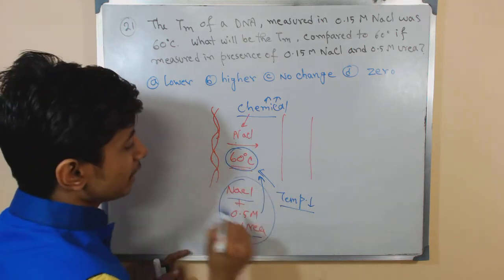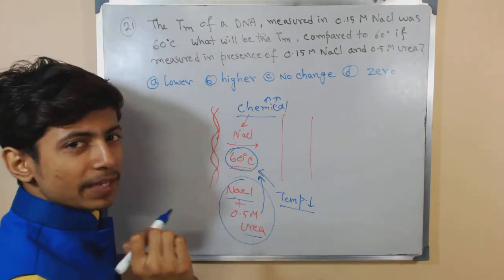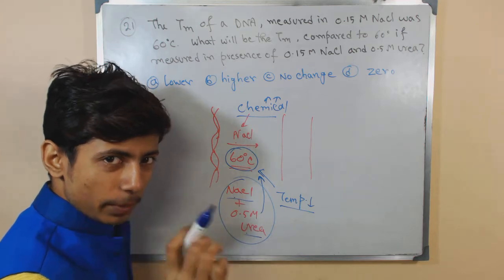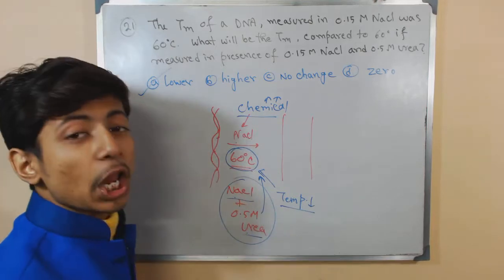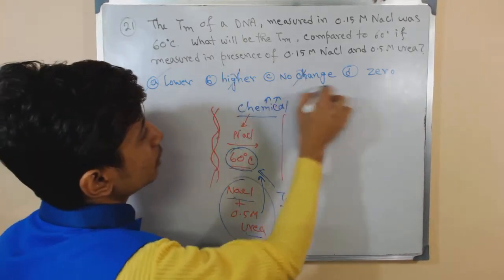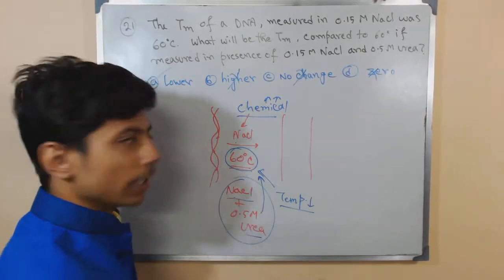So in that case, if you use NaCl along with urea, the melting temperature that we require to melt the DNA will be much lower than 60 degree Celsius. So the answer will be lower, not higher, no change or not zero. It will be lower.